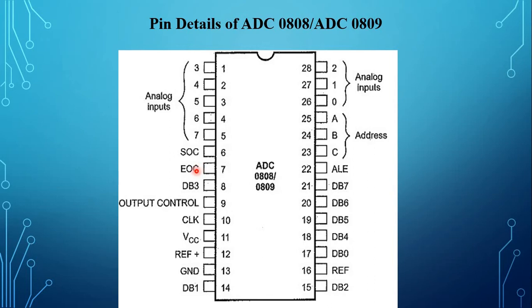The ADC uses successive approximation as the conversion technique. It does not require external zero or full scale adjustment. There is no terminal available for sample and hold between the multiplexer and comparator.